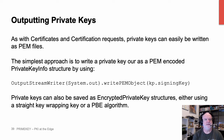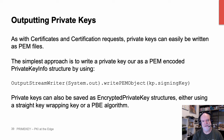Now, outputting private keys. As with certificates and certification requests, you can write a private key out as a PEM file. We've provided an override — a writePemObject method on the output stream writer — so if you simply want to write one out to system out, you just call writePemObject and pass the key you want. You can also save private keys as encrypted private key structures using either a straight key wrapping key or a PBE algorithm.